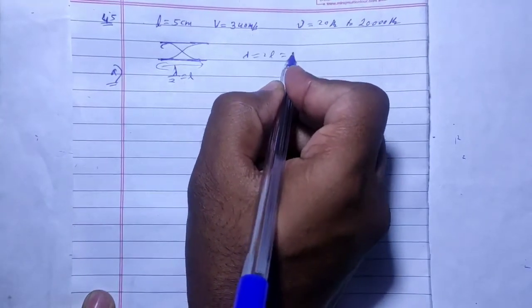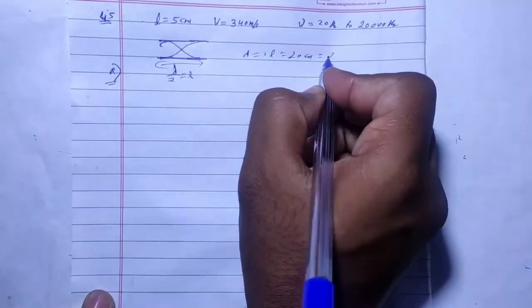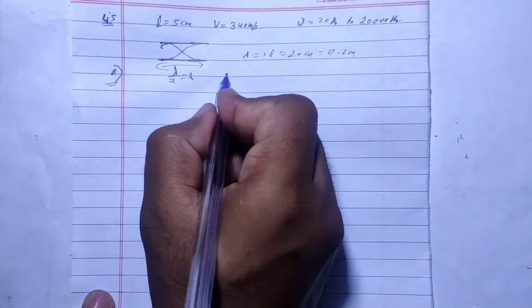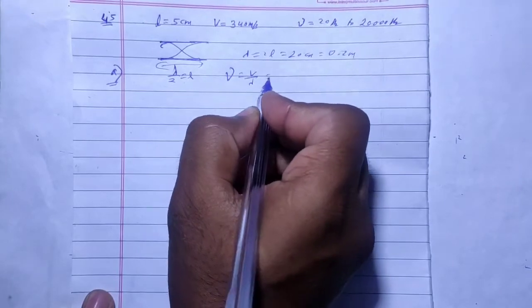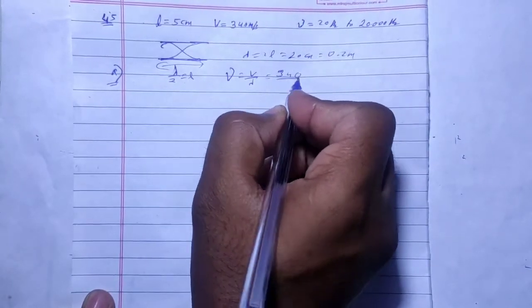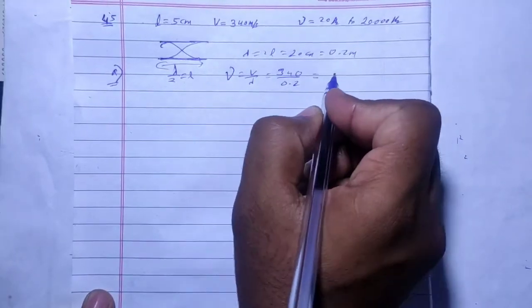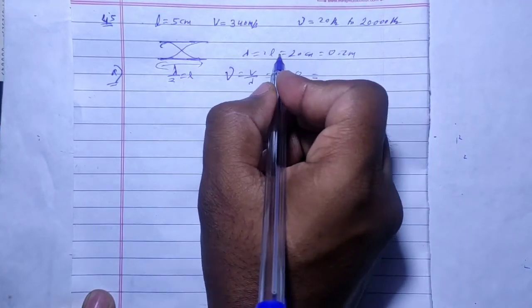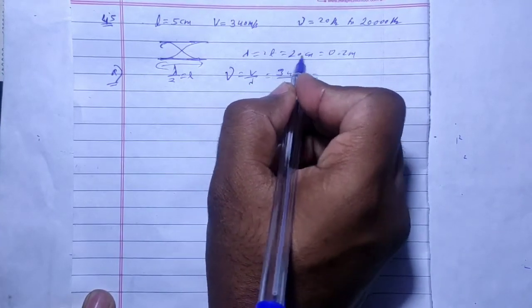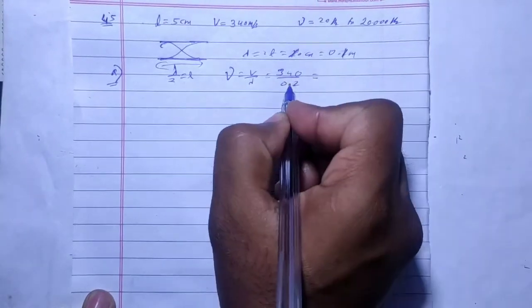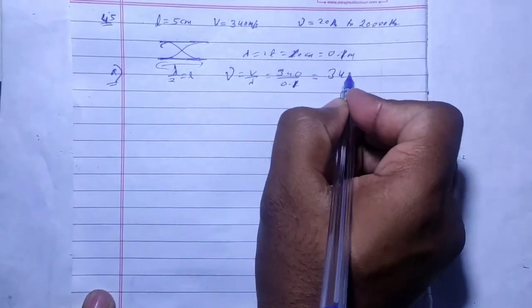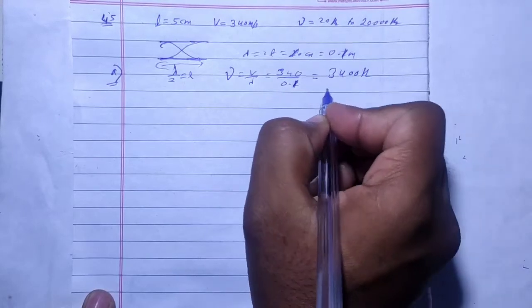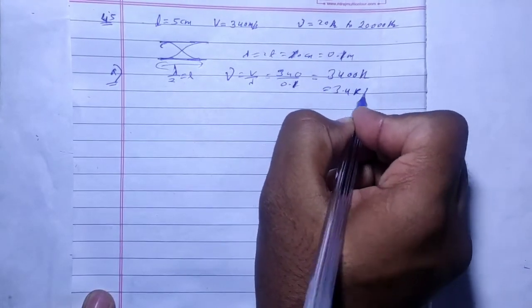Frequency equals speed by wavelength, so f = v/λ = 340 divided by 0.1, which equals 3400 hertz. This is 3.4 kilohertz, which is the fundamental frequency.